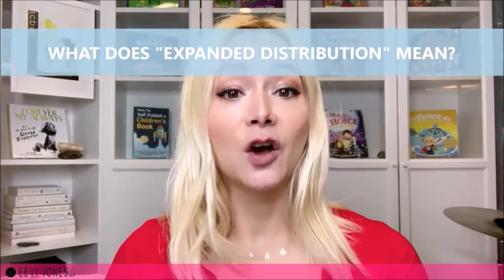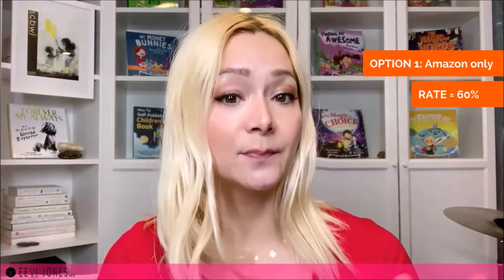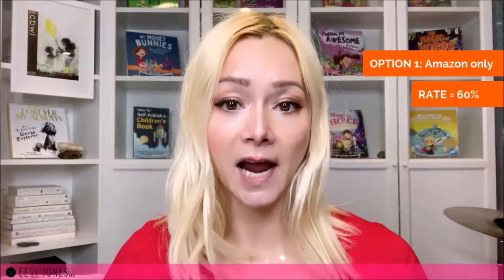What does expanded distribution mean? When speaking about the distribution of our books, Amazon's KDP — which is the print-on-demand platform I recommend to my clients, students and readers — provides us with two distribution options. Option one is the distribution of our book on Amazon only, where our book is sold directly on Amazon's websites only. Here the royalty rate you'll earn for each sale is set to 60% and is based on your book's list price. This is the highest royalty rate possible.